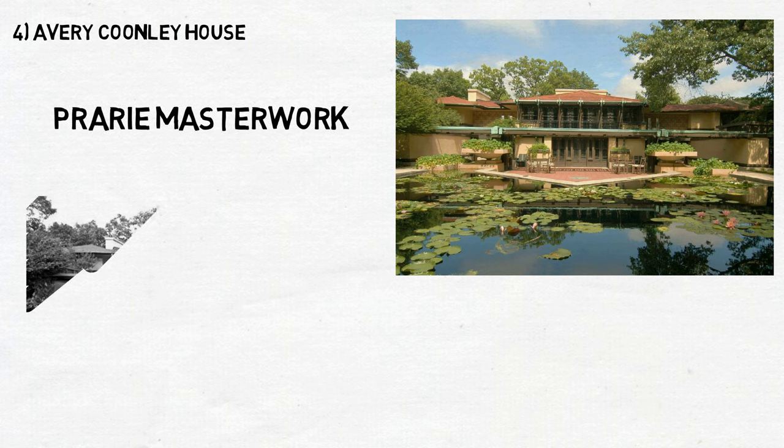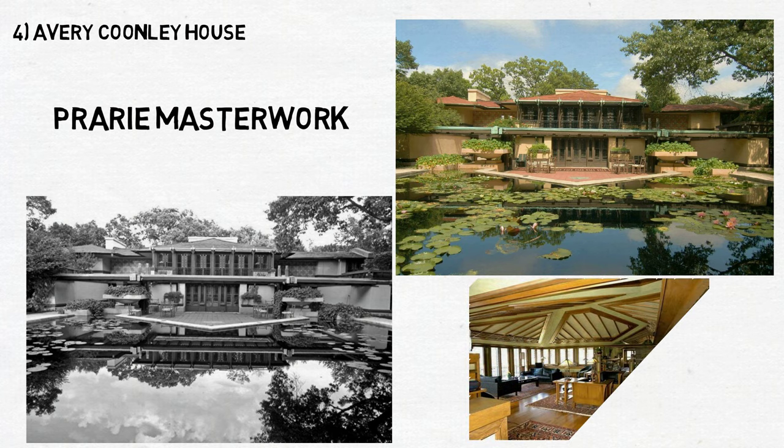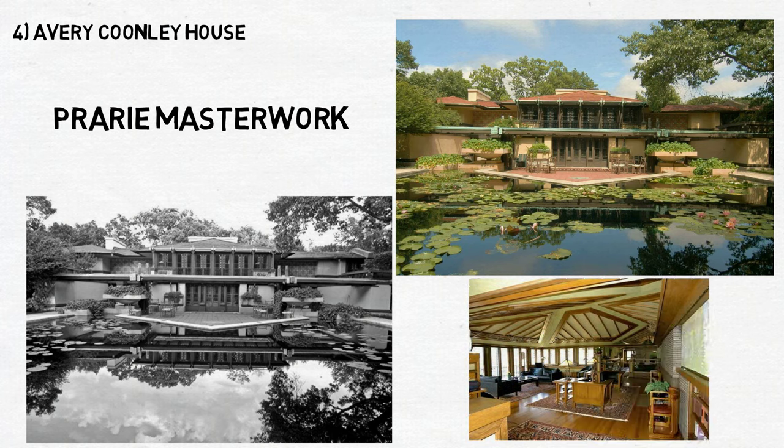Number 4: Avery Coonley House. Along with the Robie House, this is his prairie masterwork, and has recently been sold for just over $1 million. Placing the playroom at the ground level, the main dining and living rooms are raised to the second floor, with the bedrooms, guest rooms, kitchens, and servants' area given their own wing. Inspired by the flat landscape of the prairies, Wright employed long horizontal lines and an overhanging hipped roof.